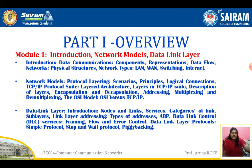The explanation starts from the second layer, that is the data link layer in the OSI model. In the data link layer, we are going to study the main introduction of data link layer, nodes and links, services, categories of links, sub-layers, link layer addressing, types of address, ARP, data link control, services, framing, flow and error control, data link layer protocols, simple protocols, stop and wait protocol, and piggybacking.